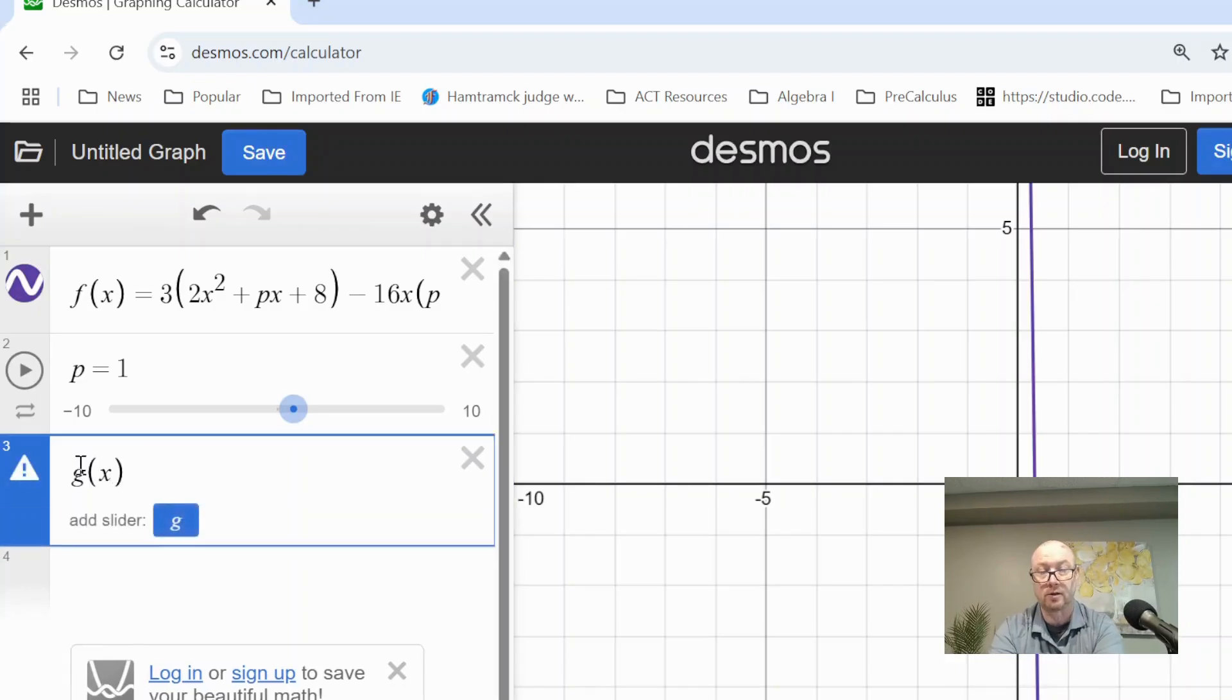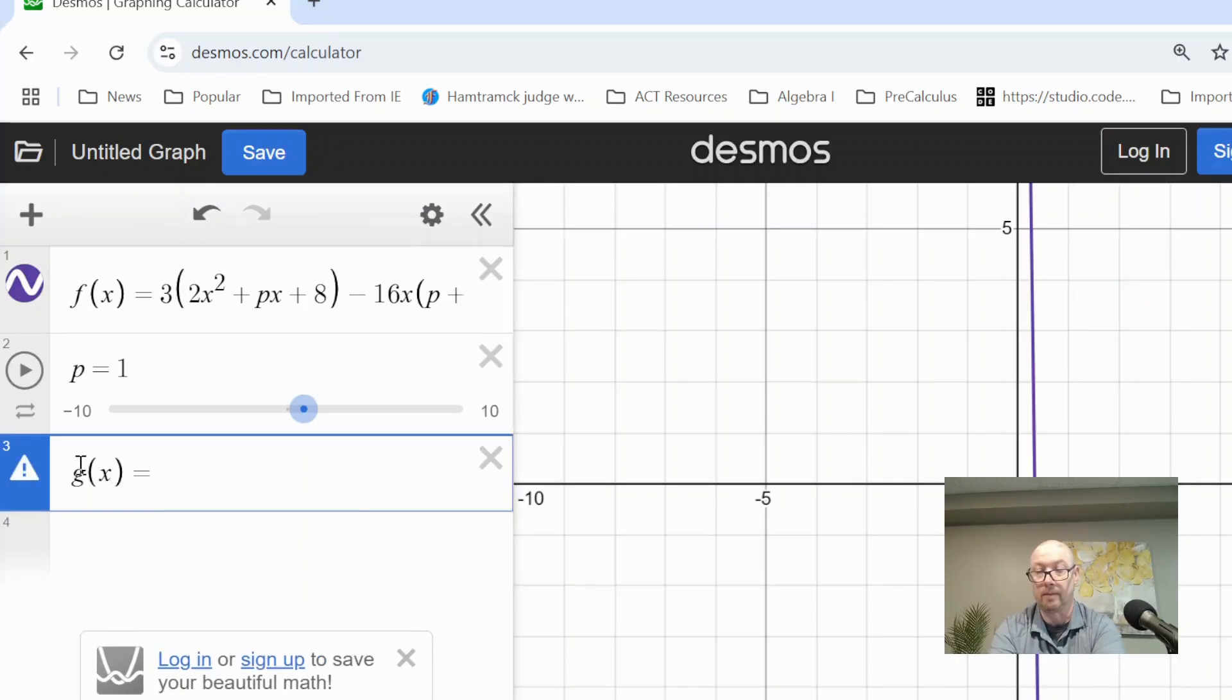We're going to use g of x, and we're going to put in the other expression, 6x squared. This is what we're trying to match up with our expression, 155x plus 24.